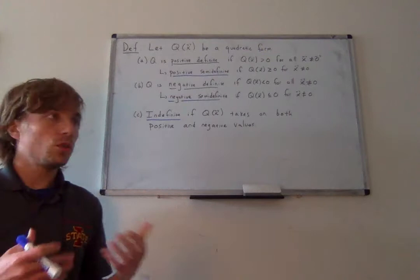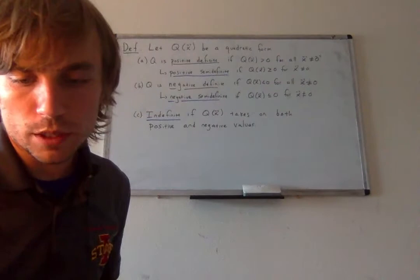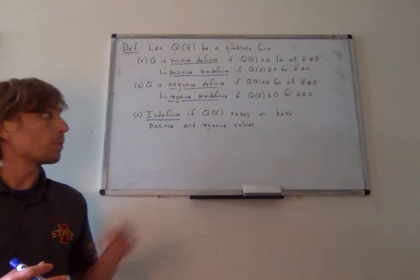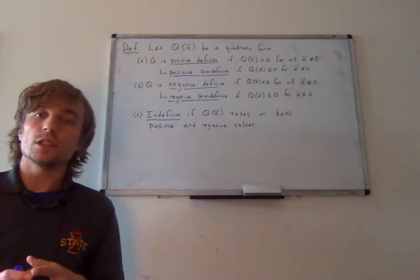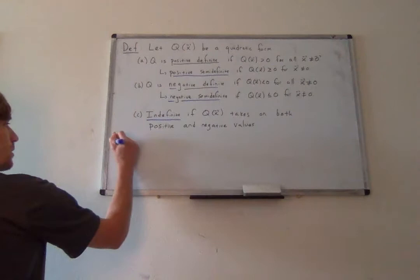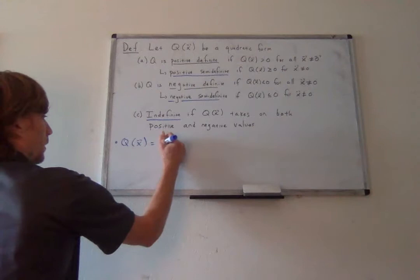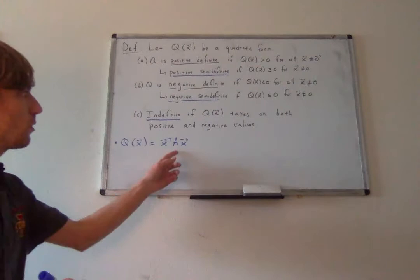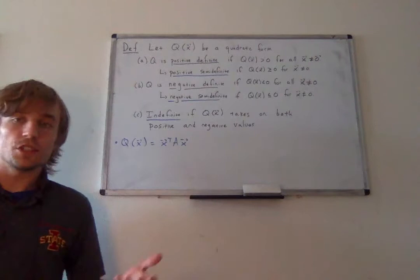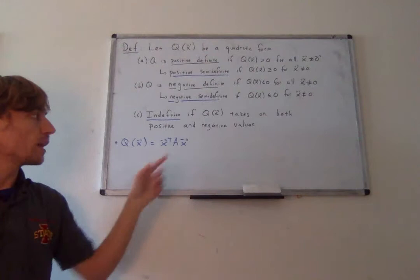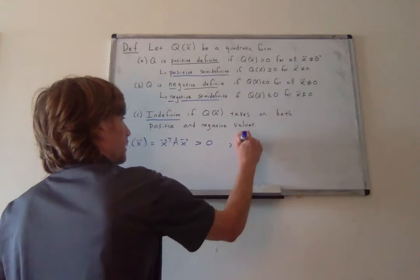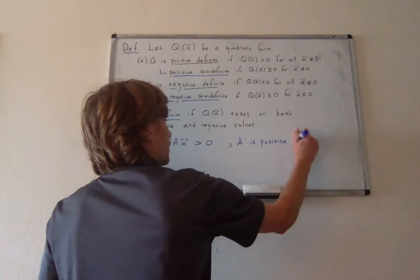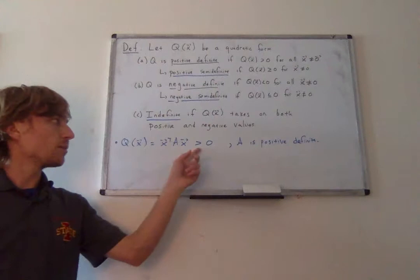The book will often say 'classify the following quadratic forms.' Every quadratic form has to fall into one of these five categories. It is also common to give these same definitions to the matrix A, since a quadratic form usually looks like X transpose A times X. So we say that A is positive definite or positive semi-definite if the value of X transpose A times X is greater than or equal to zero — meaning A is positive definite if X transpose A X is always positive for all non-zero X.